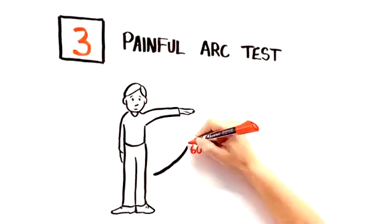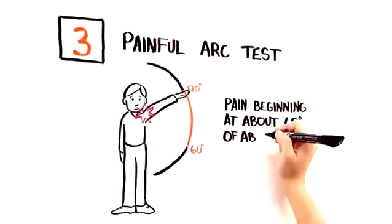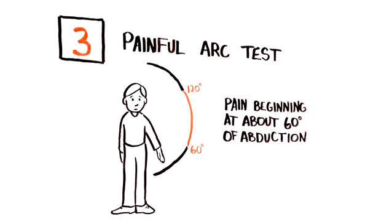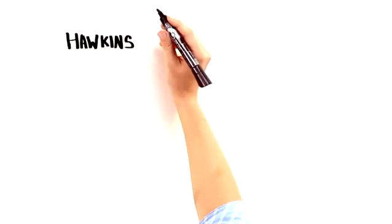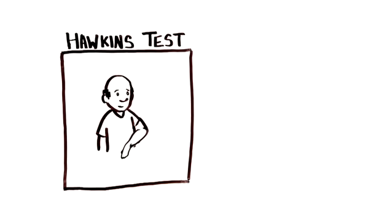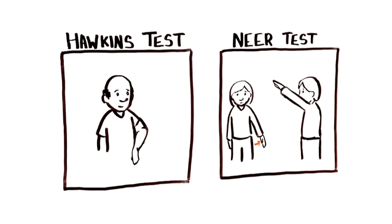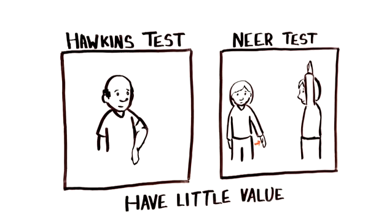Third, only one pain provocation test, the painful arc test in which the patient abducts their arm 180 degrees, was useful. Pain beginning at about 60 degrees of abduction distinguished rotator cuff from other pathology. Other frequently used pain tests, like the Hawkins test, in which the examiner internally rotates the arm while the patient flexes both arm and shoulder 90 degrees, and the Neer test, had little value, at least as reported in studies.